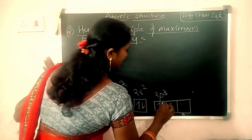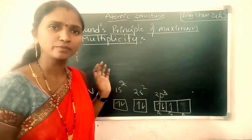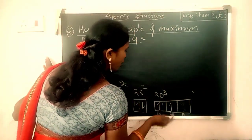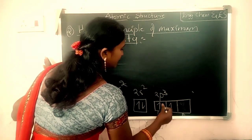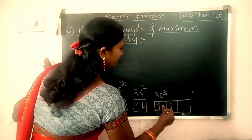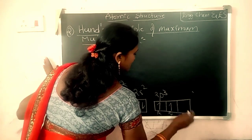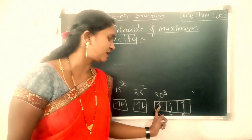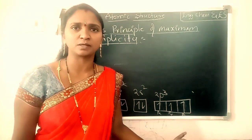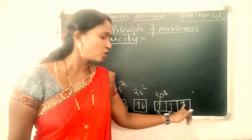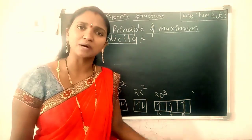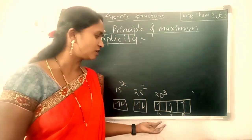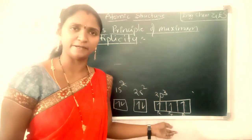However, the 3 electrons cannot be paired together. The electron can only be paired after each subshell of the p orbital already contains 1 electron each. Since there is no 4th electron, we cannot pair any orbital here.